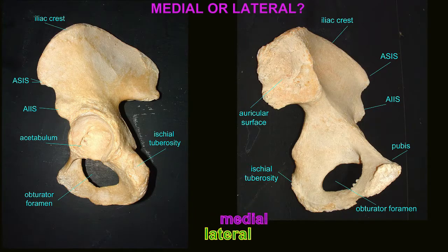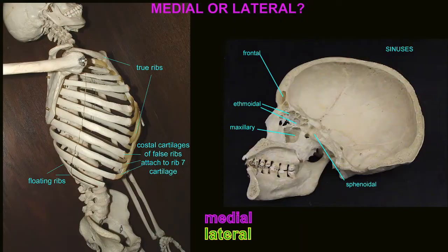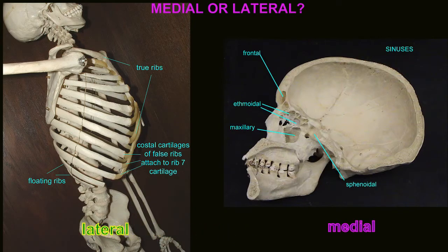In the hip, the lateral view would show the socket known as the acetabulum for the round head of the femur, while the medial view would not — it instead would show the auricular surface where the sacrum attaches. A medial view of skull bones could show a section of the cranial cavity, while a lateral view of the rib cage would be seen here.